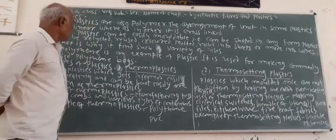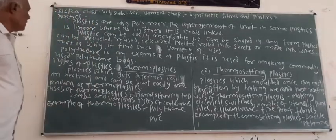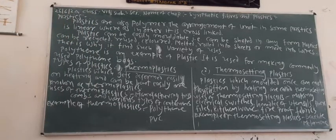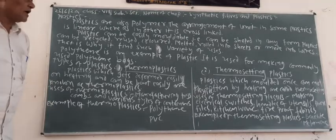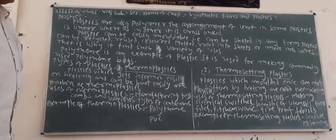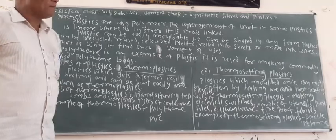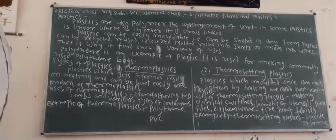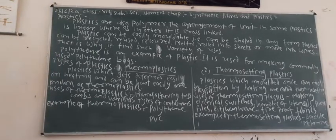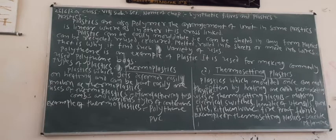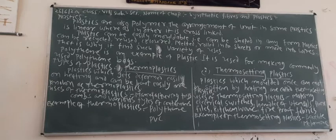Therefore, plastic can be easily moulded — it means that it can be set in any form. Plastic can be recycled, and therefore it is used again and again, that is, it can be reused.